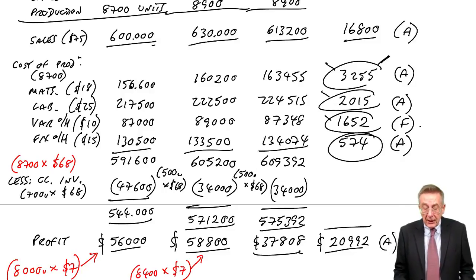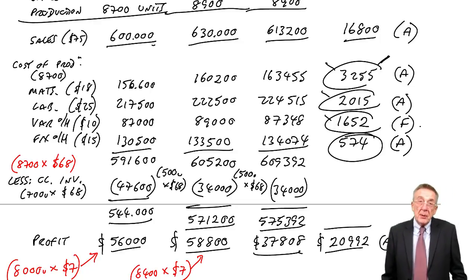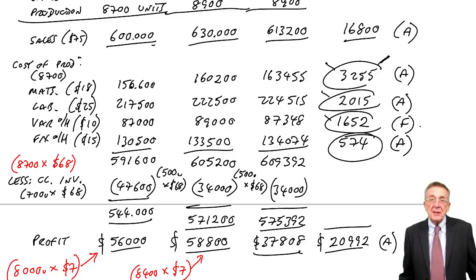And because it was absorption costing, we effectively flexed the fixed overheads. You know, because we were saying the profit is supposed to be $7 a unit, that effectively meant the fixed overheads were $15 a unit.